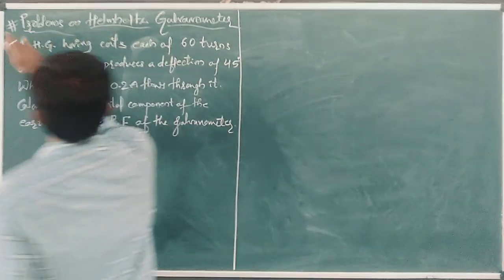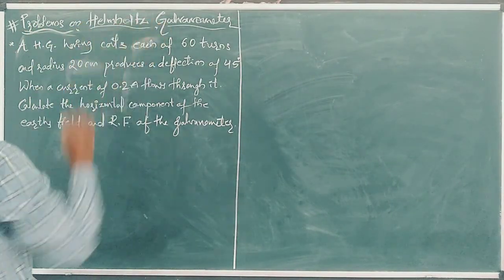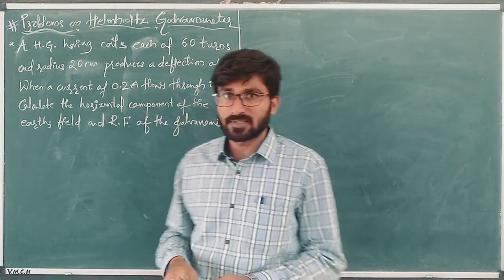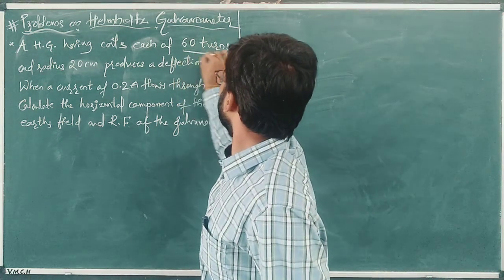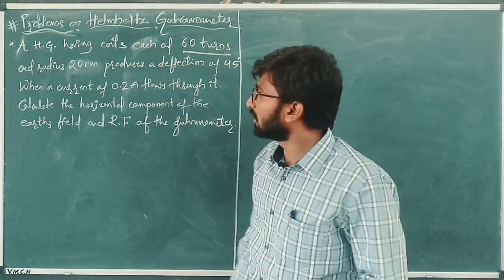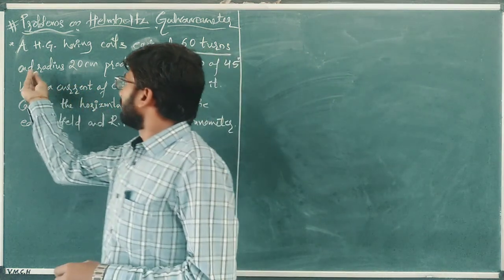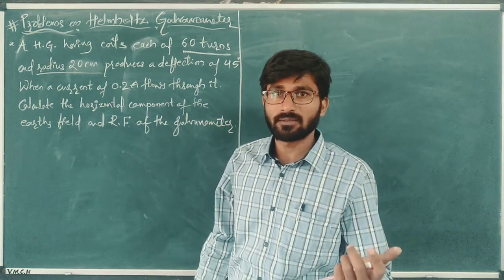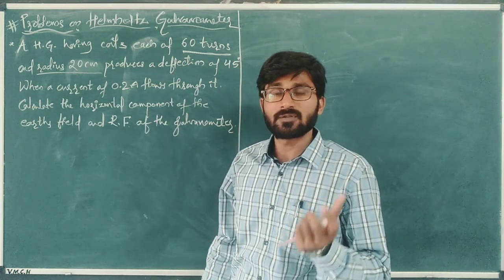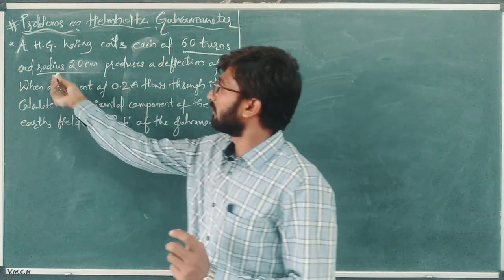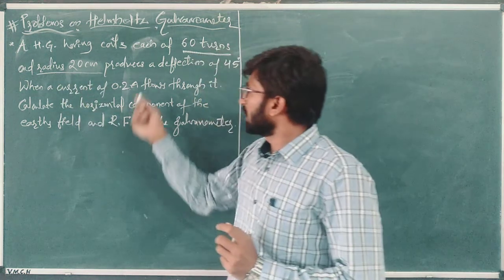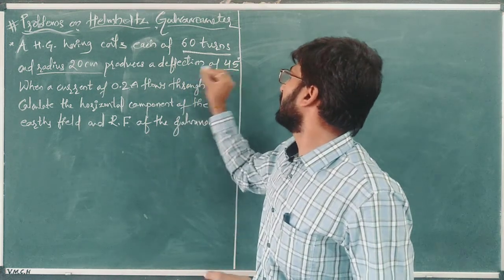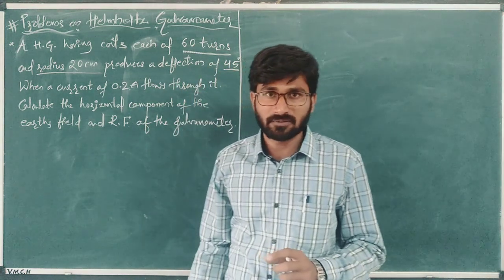Let's look at the problem. A Helmholtz galvanometer has coils each having 60 turns, and a radius of 20 centimeters. Both circular coils must have the same radius. This produces a deflection of 45 degrees — so the angle theta is 45 degrees.